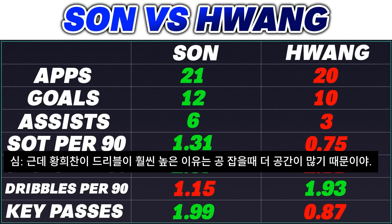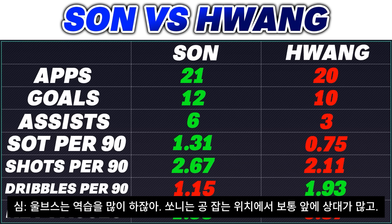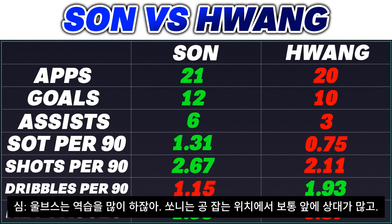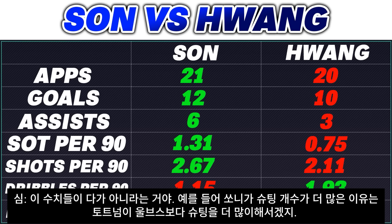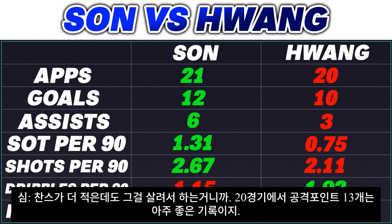When you look at that dribbling stat, the reason why Hwang's is so much higher is because when he gets the ball, he's in space a lot more because of their transitional game, whereas Son has a lot more players to confront. A lot of these stats can be affected by the teams they play for — Son probably has more shots because Spurs have more shots in general than Wolves. But Hwang is doing a fantastic job for Wolves in a counter-attacking team where he has fewer chances available to him.